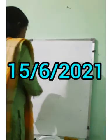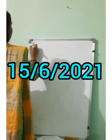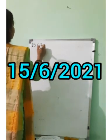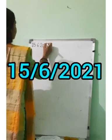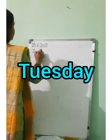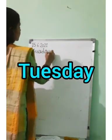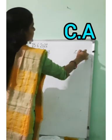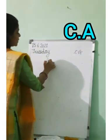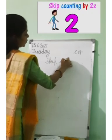What is the date today? 15 June 2021. And what is the day? Tuesday. Day is Tuesday. You will write here CA, skip counting.